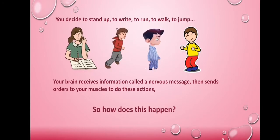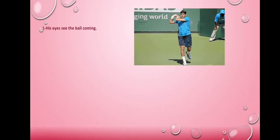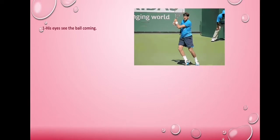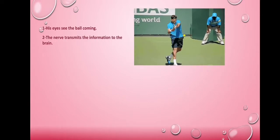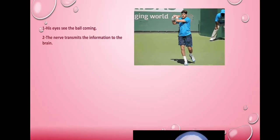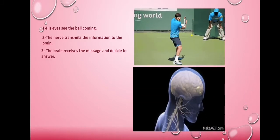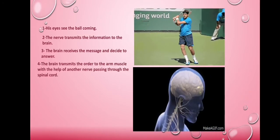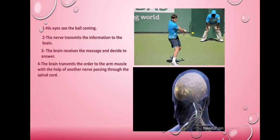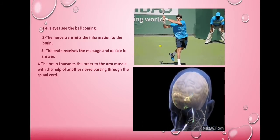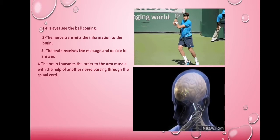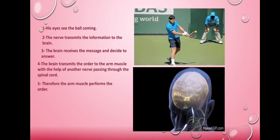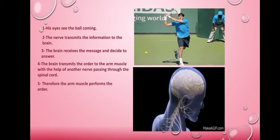So how does this happen? Look at this player. His eyes see the ball coming. The nerves transmit the information to the brain. The brain receives the message and decides to answer. The brain transmits the order to the arm muscle with the help of another nerve passing through the spinal cord. Therefore, the arm muscles perform the order.